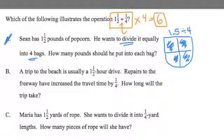We're going to do the same thing. Now, you read it over and I'll read it over, but you read it over too so that we can try and draw a picture that helps us model the math behind it. It says here, the trip to the beach is usually an hour and a half drive. Repairs to the freeway have increased the travel time by a quarter, by a quarter or 25%. How long will the trip take? Okay.